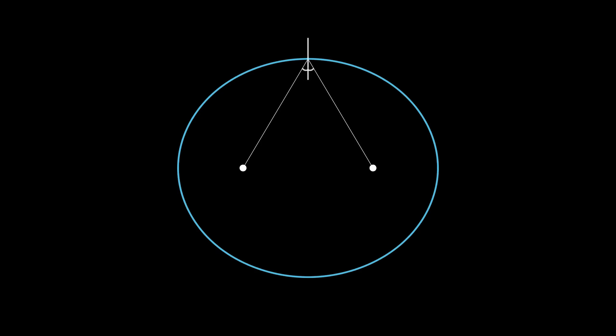If we draw a normal, like so, at this point on the ellipse, we can see that two angles form. Some of you might now notice that these two angles actually equal in size. Does this hold for any point on the ellipse?